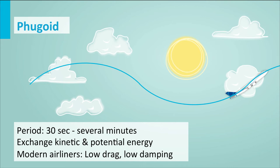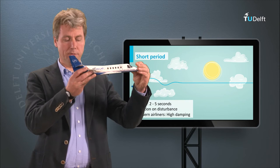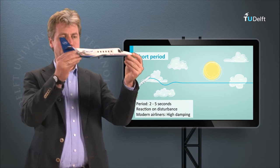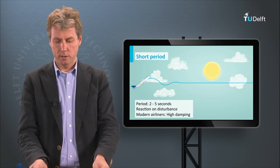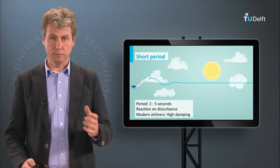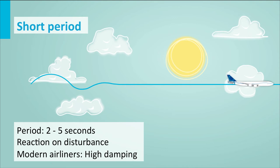There is also a faster one — the short period. It has basically the same kind of movement, going up and down, but it dampens out very quickly. It is hardly periodic; in fact, it dampens so fast that you will have trouble noticing more than one period. The period is 2 to 5 seconds, and as mentioned, it is hard to notice because of the high damping.